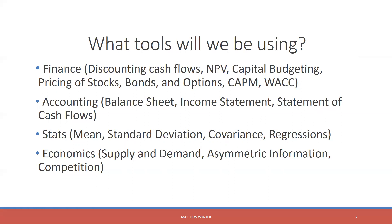Why does co-variance matter? If I'm holding stock in country A and holding stock in country B, I want to know how those two are going to co-move together — so how can I diversify? All of this is going to be built on top of a foundation of economics. We use supply and demand, asymmetric information, competition between firms and investors, to try to understand this international setting.